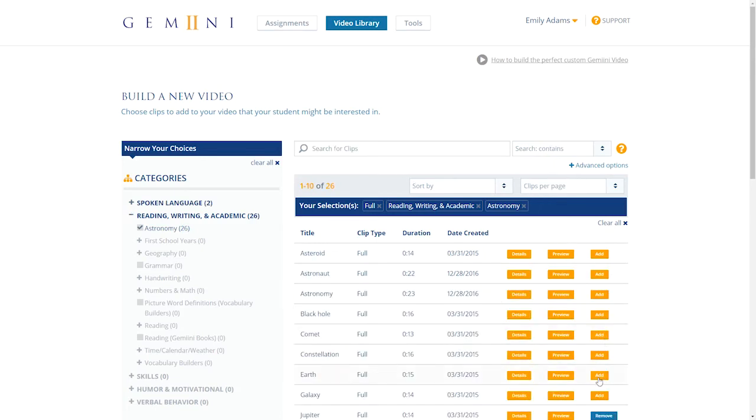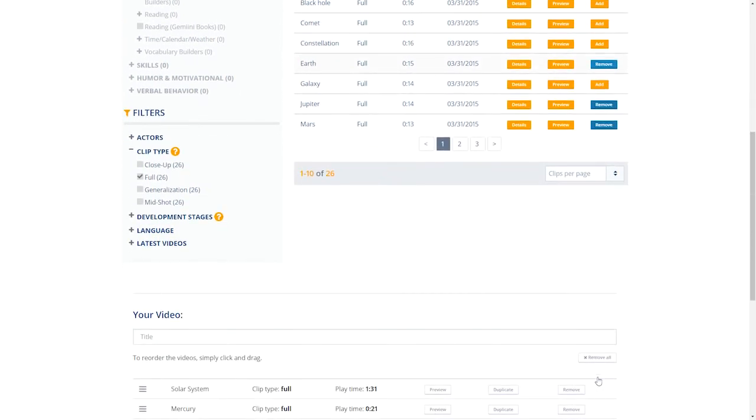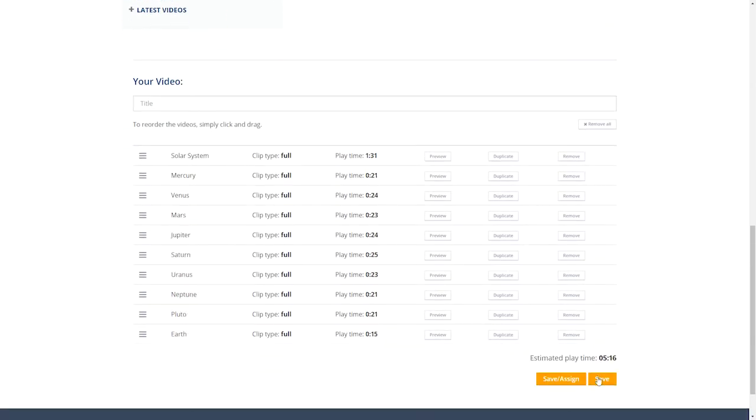When you find a clip you like, add it to your queue by clicking the Add button. It will drop down into the list below.